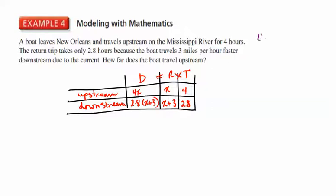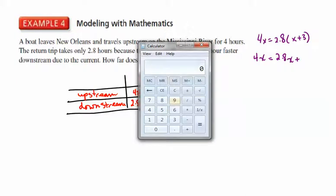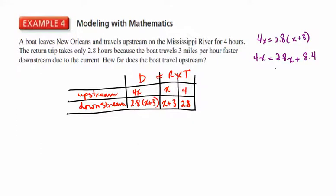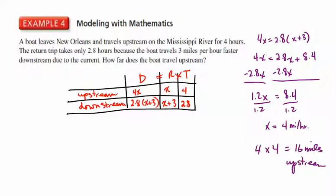And we have 4X is equal to 2.8 times X plus 3. And multiplying that out, we get 4X is equal to 2.8X plus 2.8 times 3 equals 8.4. We're going to subtract 2.8X from both sides. And that leaves us with 1.2X is equal to 8.4. Dividing by 1.2 on both sides, we get X is equal to 4 miles per hour. Then since the travel time was 4 hours, we multiply 4 by 4, we get 16 miles upstream. So that'll do it for this video and for these problems.